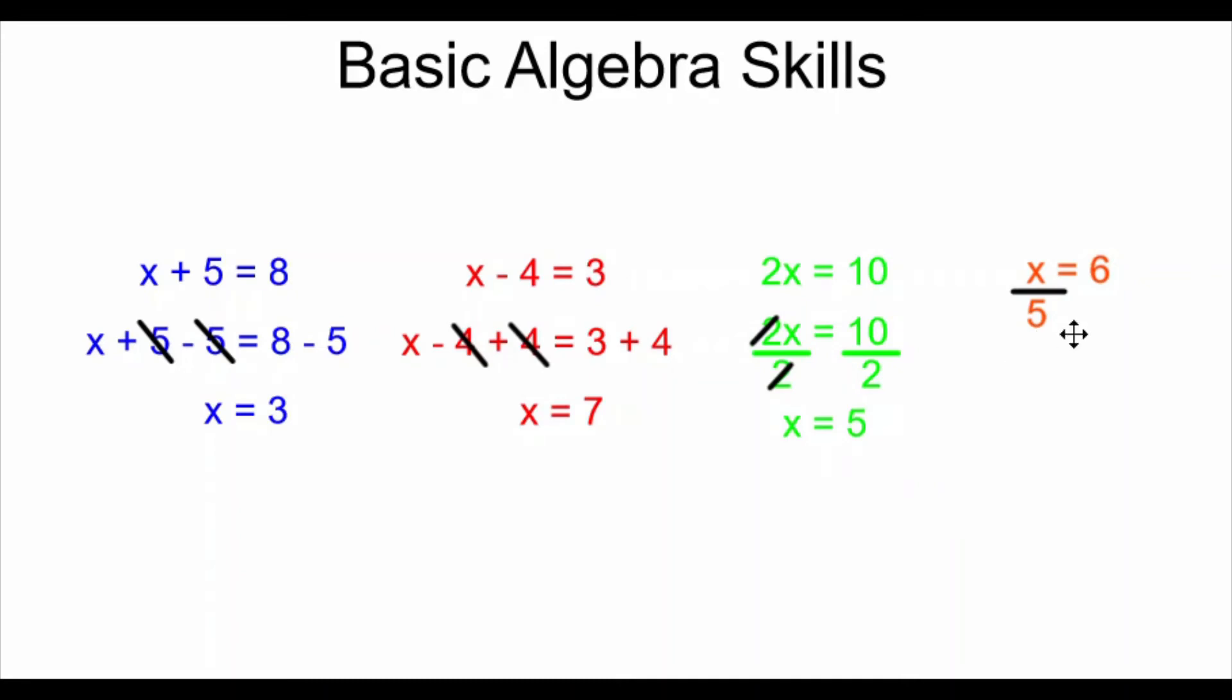Finally, in the last example, my x is having a 5 divided from it. The opposite of division is multiplication. So I do the opposite. I multiply both sides of the equation by 5. These 5s cancel. My x is isolated. 6 times 5 is equal to 30. So I have x equals 30. I have my answer.